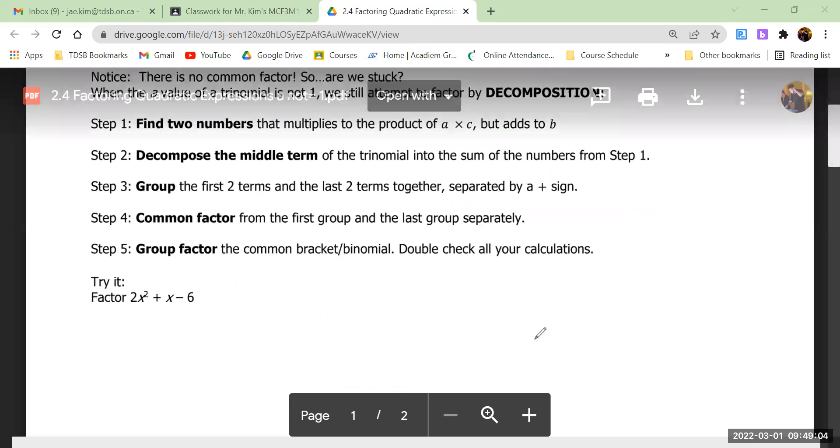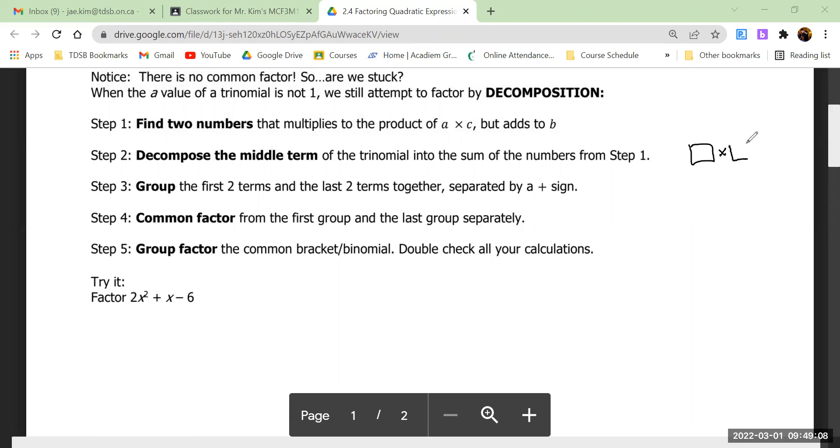Do you remember in the original simple trinomial factoring you're looking for two numbers that multiply to the last number and the same two numbers add to the middle number? You're doing the same thing, but look at what's different: you're going to find two numbers that multiply not just to c but to the product of a times c, but still adds to b.